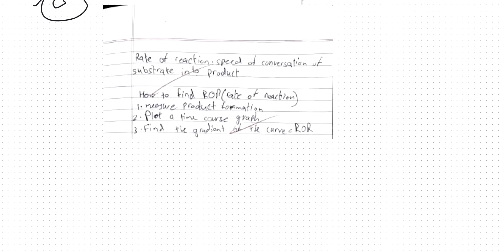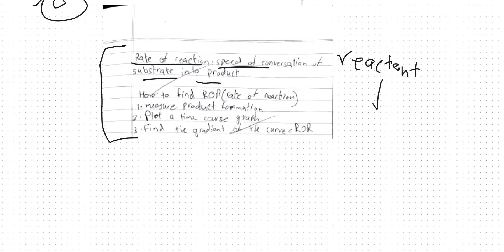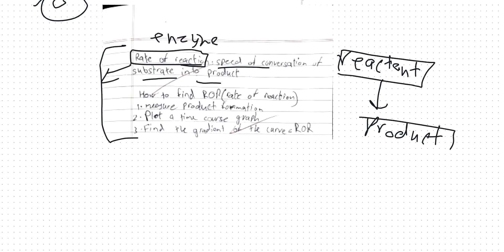The last thing for enzymes is the rate of reaction. The rate of reaction is the speed of conversion of the substrate into product — the rate at which reactants are becoming products. Enzymes are very good at increasing the rate of reaction, so they increase the process through which reactants become products. To find the rate of reaction, you first measure the product formation and plot a time-concentration graph, then find the gradient of the curve — rise over run — and that gives you the rate of reaction.